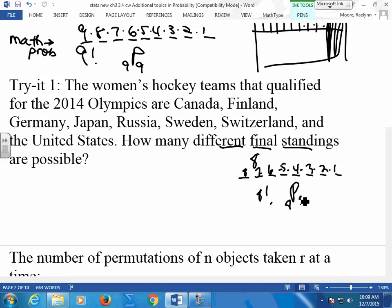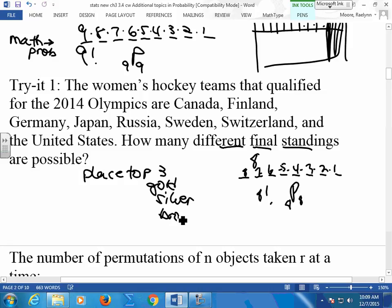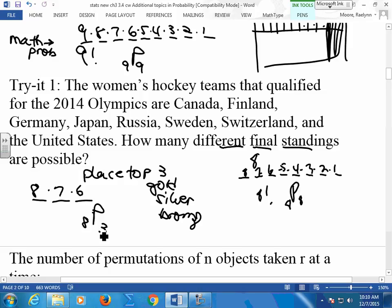What if I said this? I have 8 teams that qualify, but I'm only going to place the top 3. I want a gold, a silver, and a bronze. How many different final standings can I make now? I have 3 places to place them in. I have 8 choices for the first one, then 7, then 6. Just multiply those. You can't do factorial because it doesn't go down to 1. How would I set up my permutation? 8 things and how many places? 3. It matters who comes first.